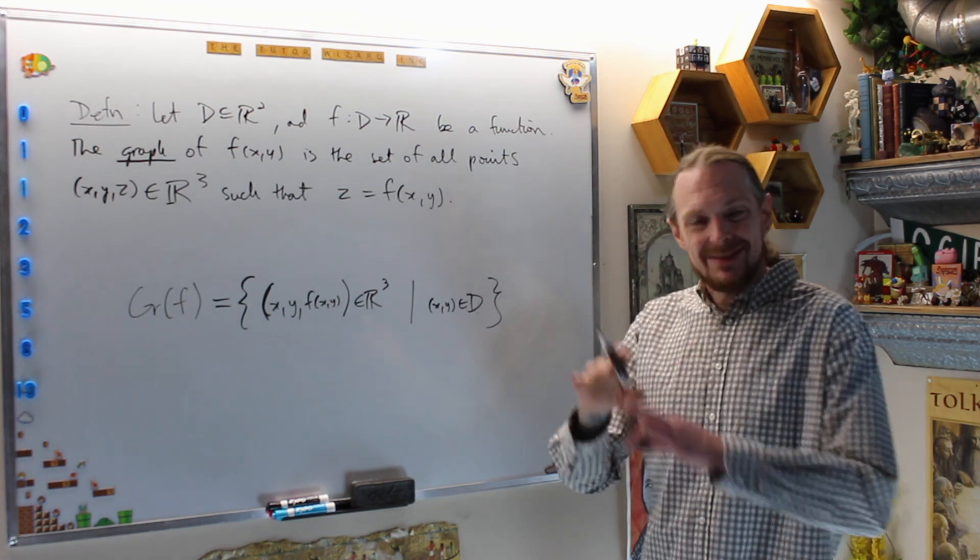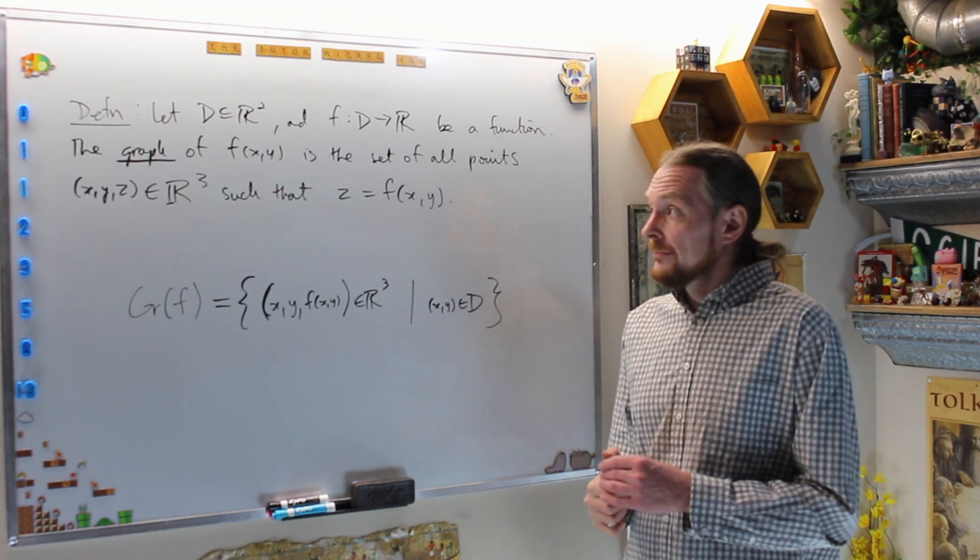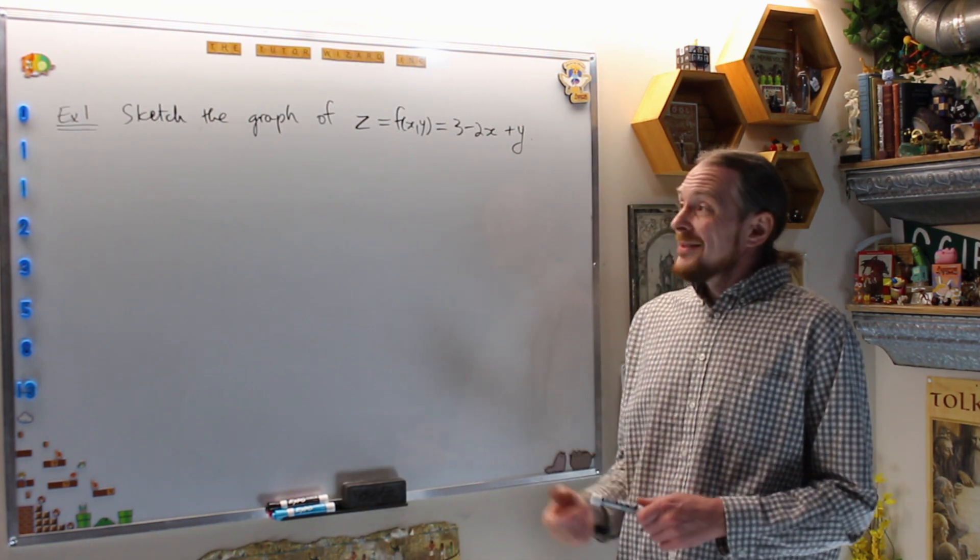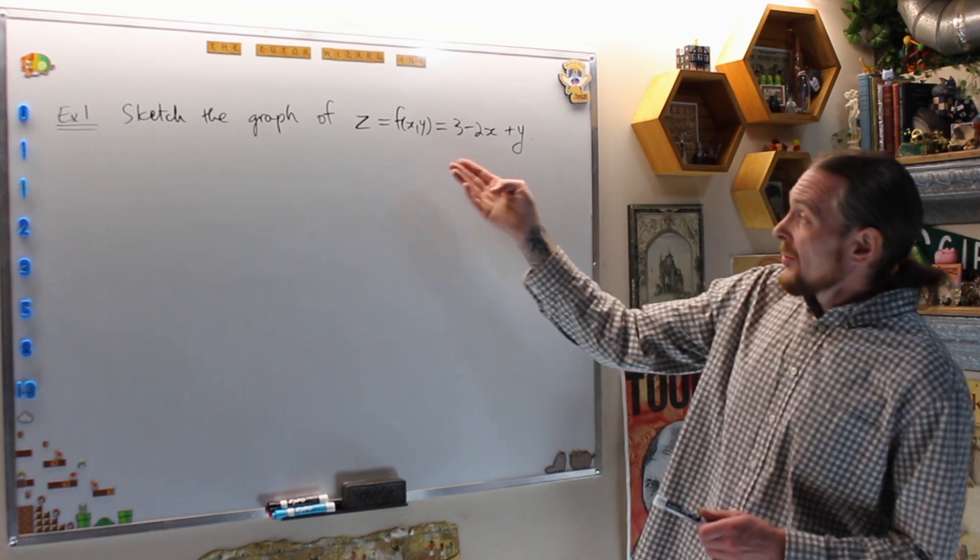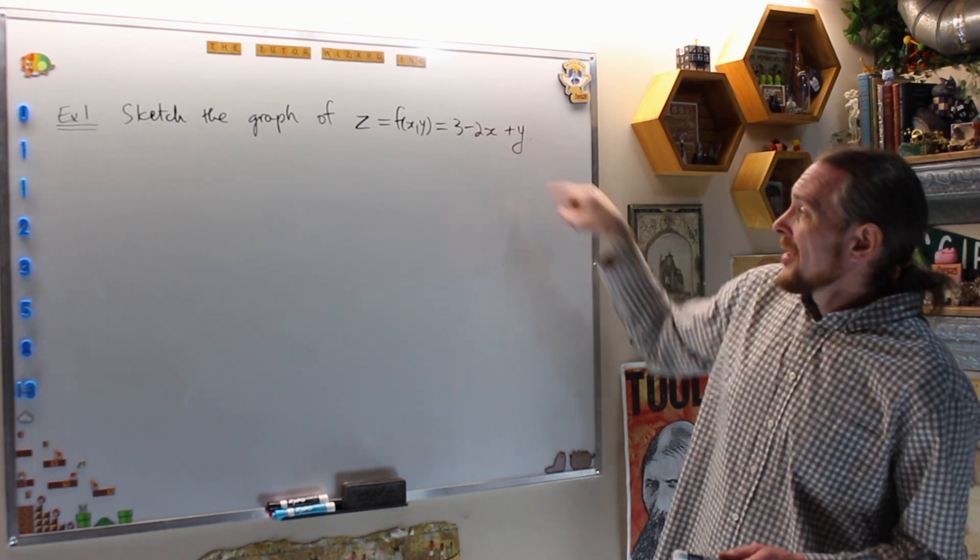More explicitly, the graph of f equals (x,y,f(x,y)), those points which are in R³ such that (x,y) is a point in our domain D. This is the graph, it's a surface in three space now, not a curve in the plane. Let's do some examples.